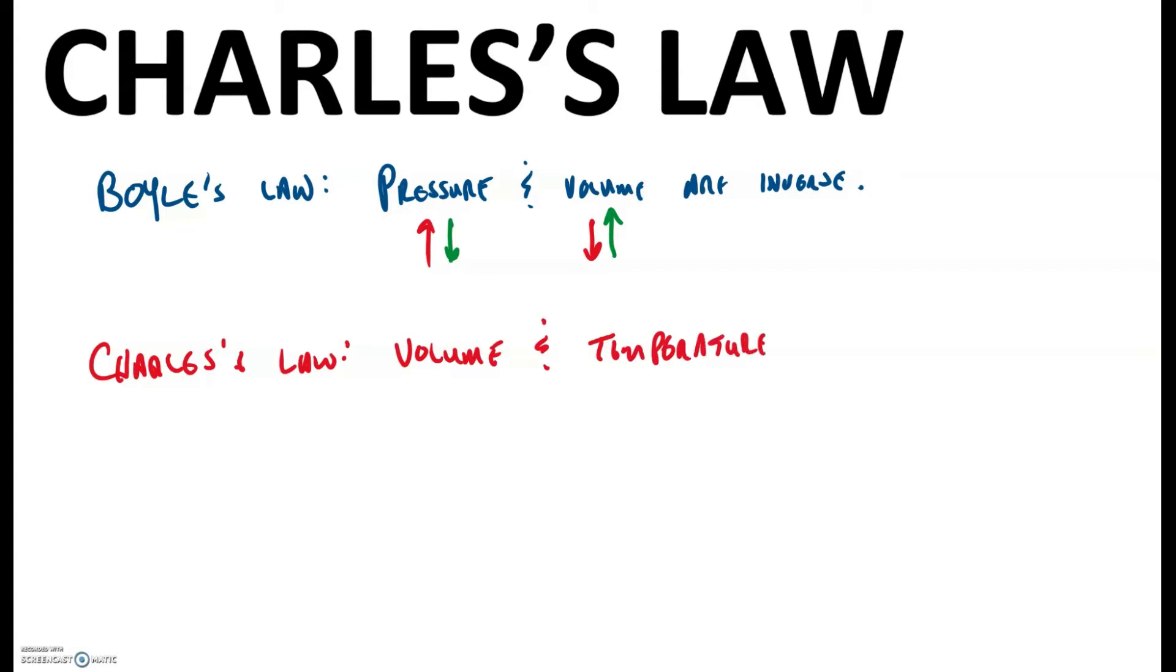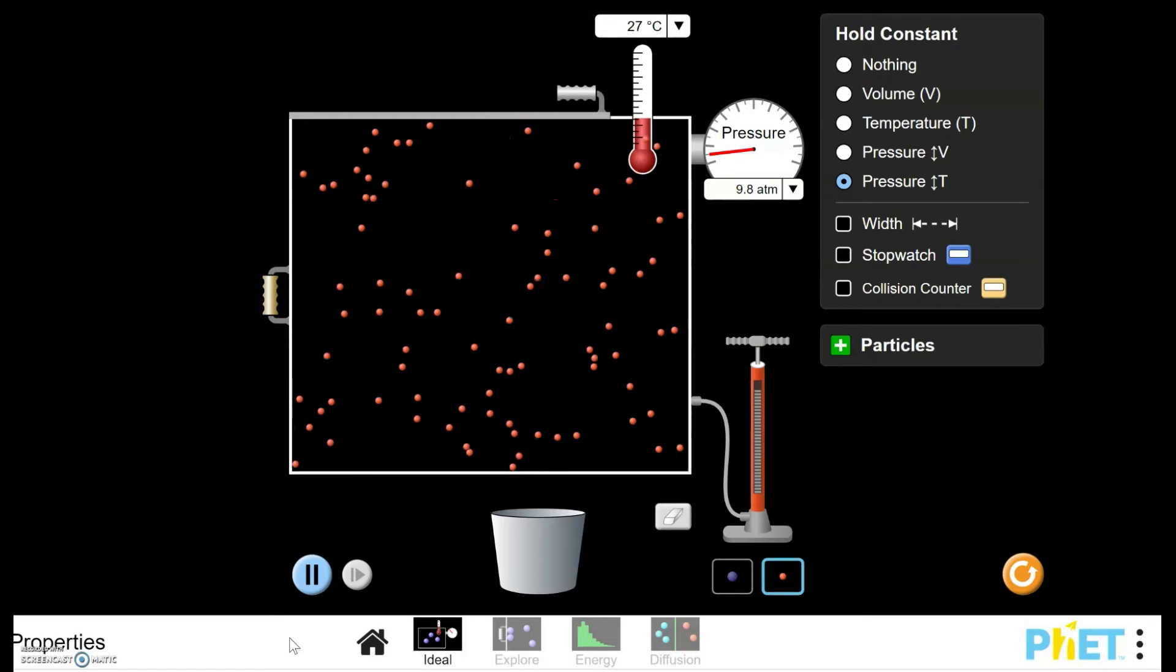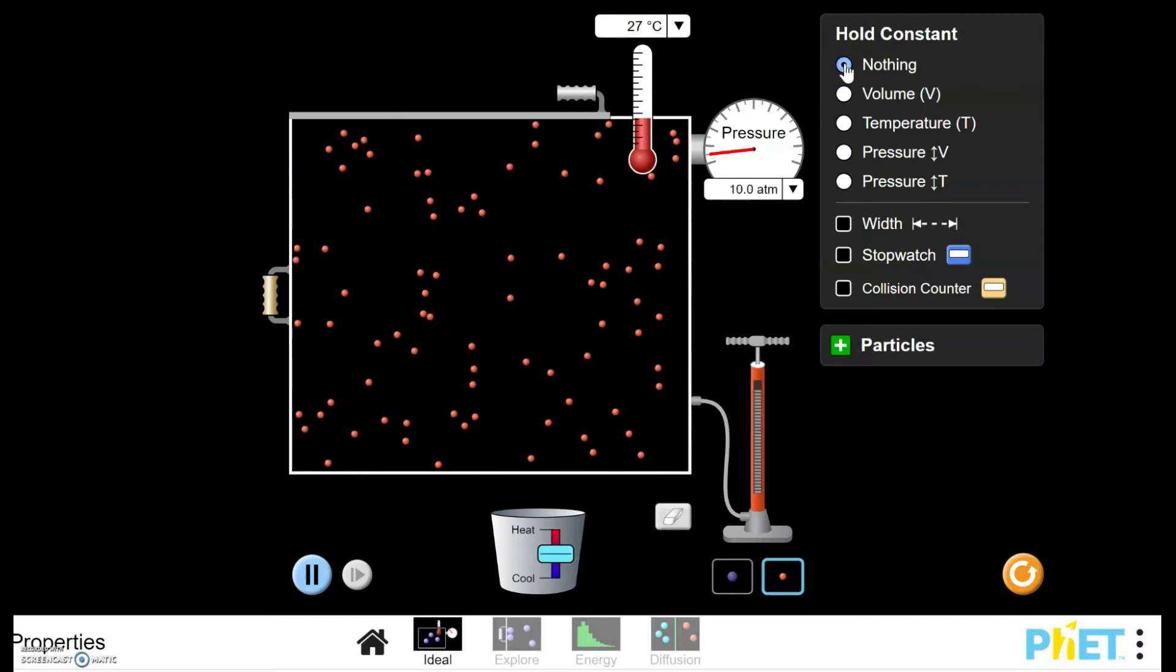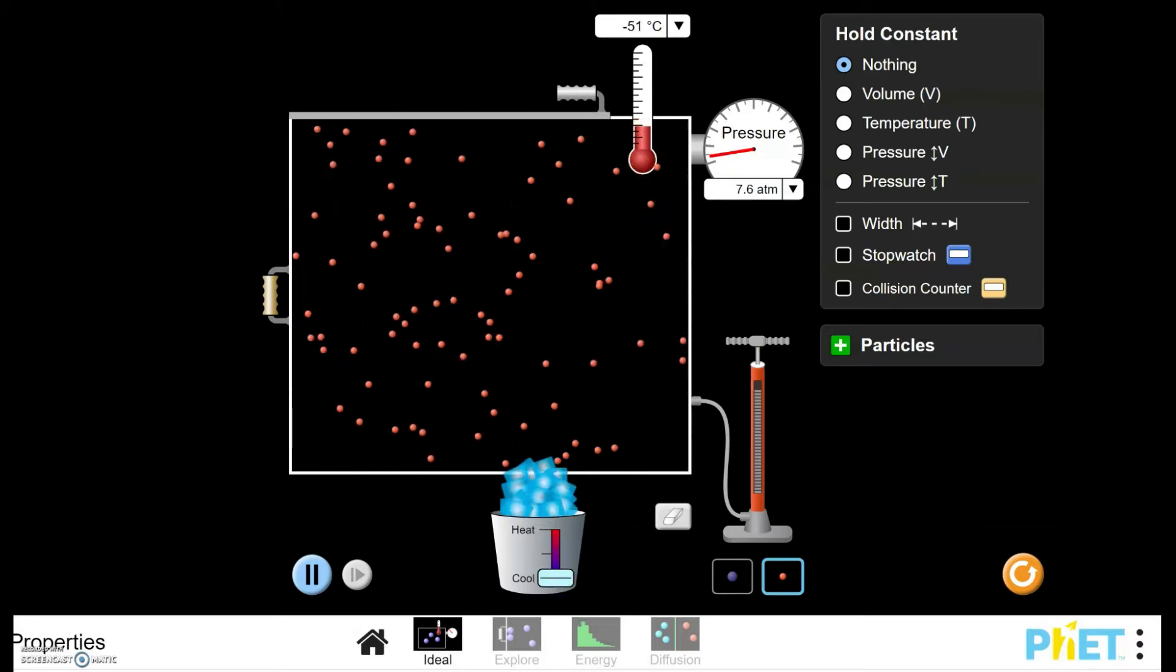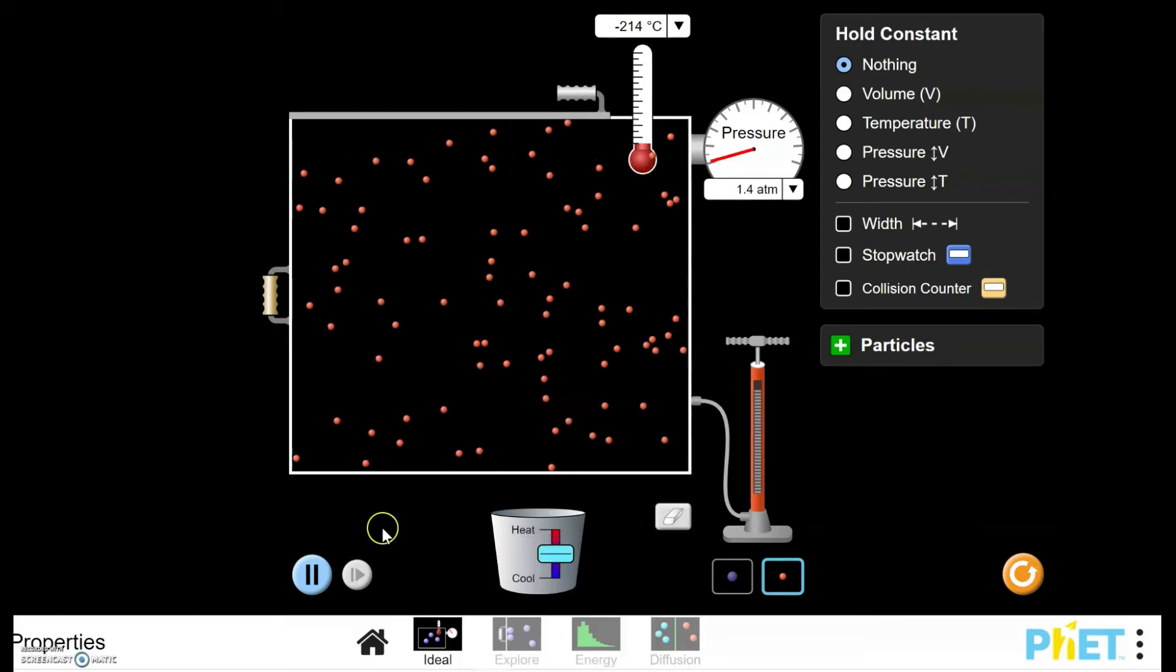For the moment, what we're going to do is go to our simulation, our gas law sim. We have a situation with this sim where we are at 27 degrees Celsius. We've got some gas bouncing around. In accordance with kinetic molecular theory, molecules are always in motion. If we decrease the temperature, we can visibly see the speed with which these molecules are moving begins to decrease.